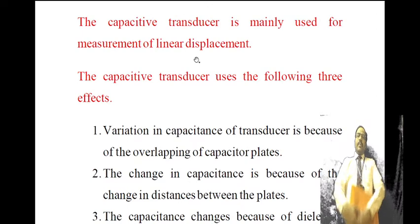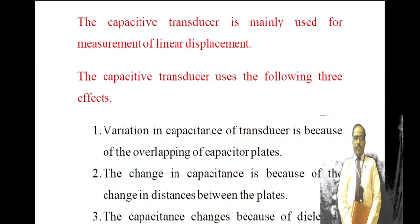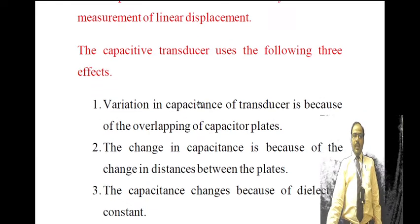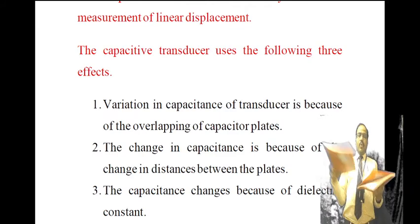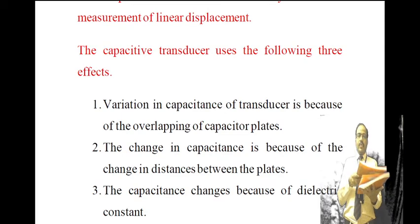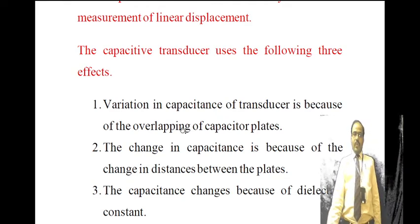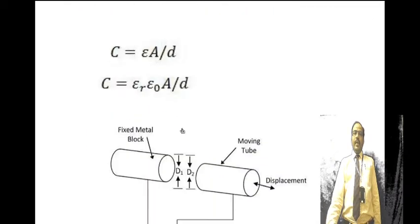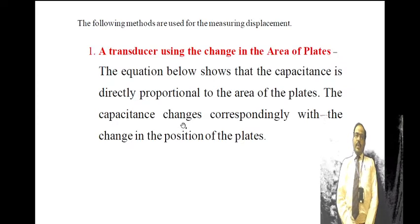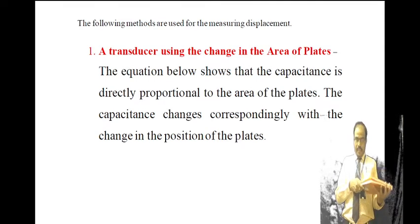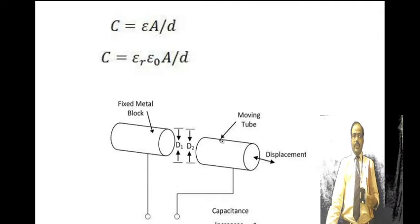Capacitive transducers can be used for measurement of displacement through three effects: (1) variation in capacitance due to change in overlapping area of the capacitor plates, (2) change in capacitance due to change in distance between the two plates, and (3) change in capacitance due to change in dielectric constant. The equation C = εA/d shows that capacitance is directly proportional to the overlapping area.